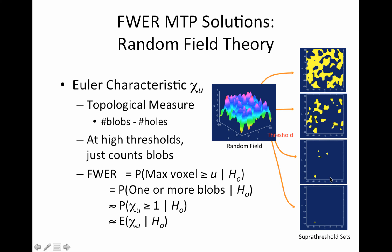So the topological measure is actually the number of blobs minus the number of holes. And as you can see, if the threshold's high enough, this becomes really simple because you just count how many blobs there are. So this Euler characteristic has, luckily somebody's already done the work, right?